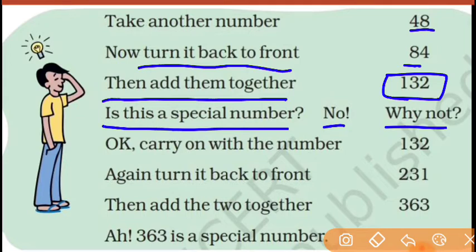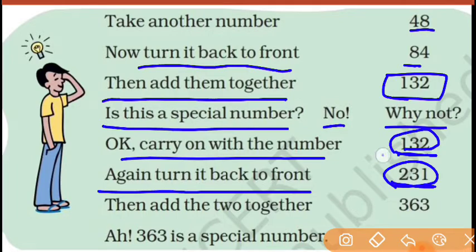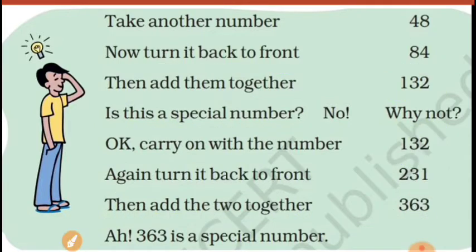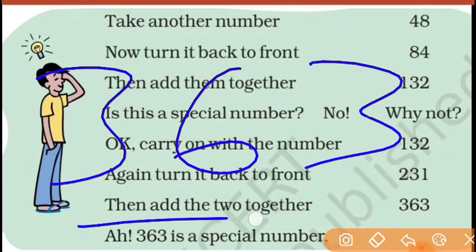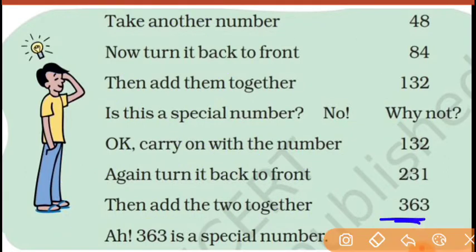So continue with 132. Turn it back to front — 132 reversed is 231. Now add 132 plus 231. You will get 363. And you know, 363 forward, backward — same to same. So now 363 is a palindrome. You have changed this number into a palindrome number.